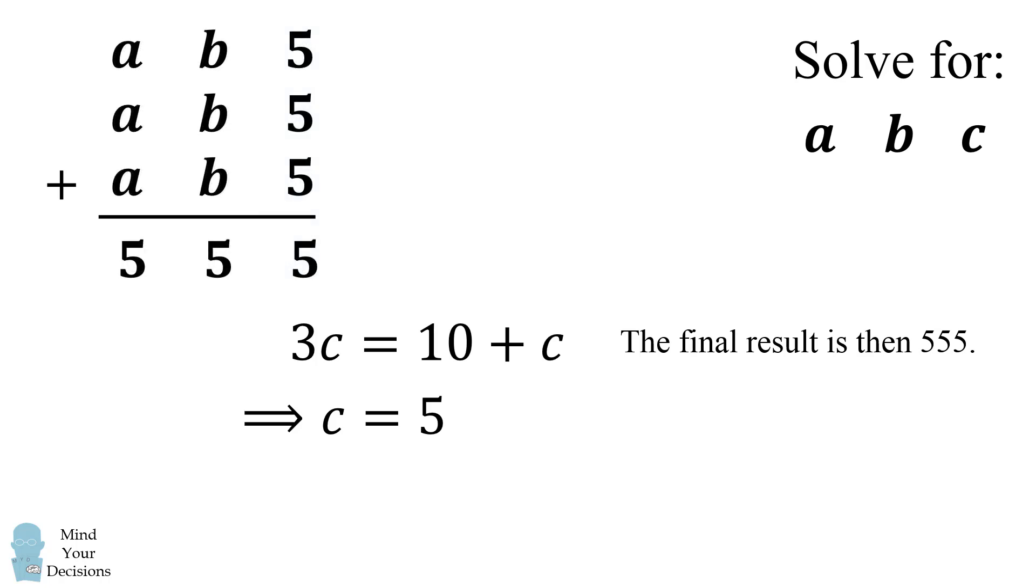And we've essentially solved the problem. There's just one more step we need to take. We have the same number being added together 3 times to equal 555. 3 times some number is equal to 555. That means if we take 555 and divide it by 3, we get abc.